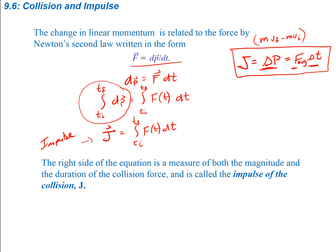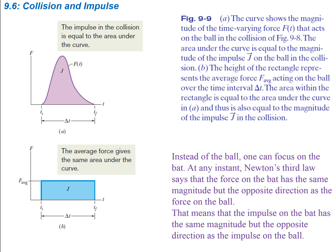The right side of the equation is a measure of both the magnitude and duration of the collision force, and it's called the impulse of the force J. These two pictures show that the impulse in the collision equals the area under the force-versus-time curve. That will vary depending on the type of collision. If you knew the average force during the period of time, you could use a constant average force over the same period and get the same area under the curve — that also gives you the impulse.